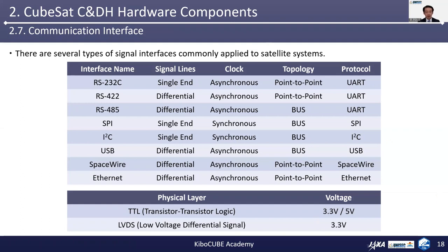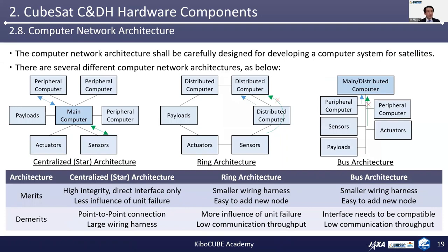Note that additional information about commonly used physical layers of the communication interfaces such as TTL, the transistor-transistor logic, available for 3.3V and 5V communication, and low-voltage differential signal, LVDS for 3.3V, is also relevant. With this knowledge in mind, you need to design the computer network architecture for your satellite in the most efficient manner. The computer network architecture shall be carefully designed for developing a computer system for satellites.